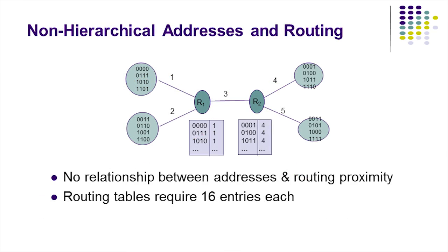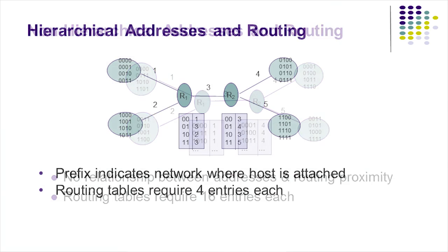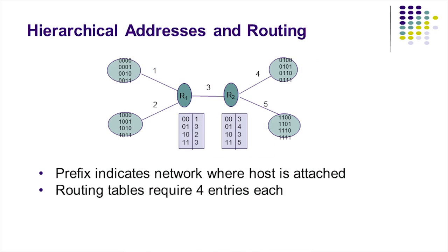The size of routing tables can be reduced if a hierarchical approach is used in the assignment of addresses. If the addresses are not hierarchical, there is no relationship between address and routing proximity, and routers need to maintain 16 entries in their routing table. But if the hosts at each of the four sides have the same prefix — denoted by the first two bits of the address — the two routers need only maintain tables with four entries each. Essentially, hosts that are near each other should have addresses that share a common prefix.